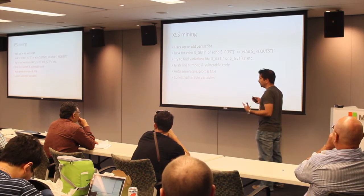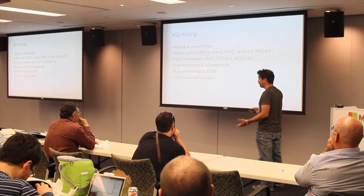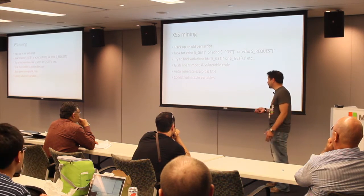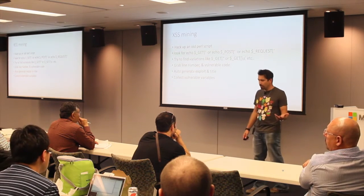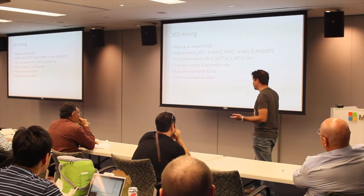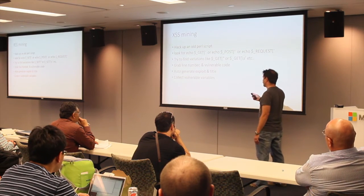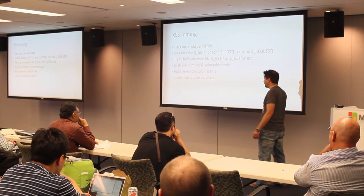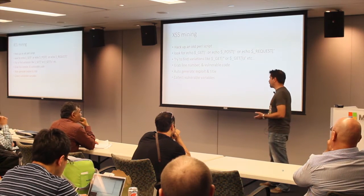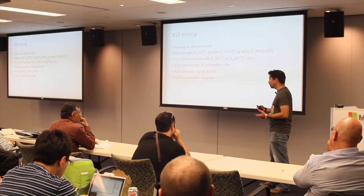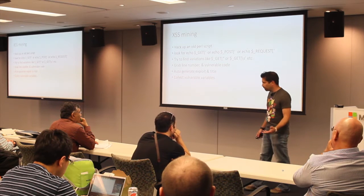Whenever I do an advisory, I like providing a snippet of the code the vulnerability is in — in case the author changes or silently fixes it, I can diff the two and see what changed, or if they snuck something in wrong. I also wanted to automatically generate the exploit and title — like 'cross-site scripting vulnerability in plugin foobar version 1.2.3' — and collect the vulnerable variables to use as payload injectors.